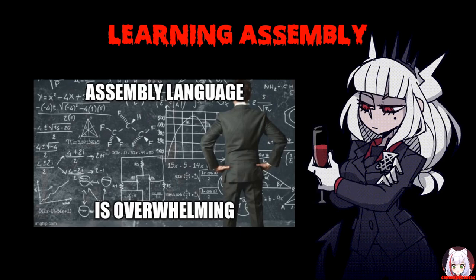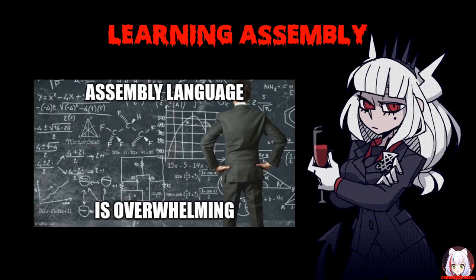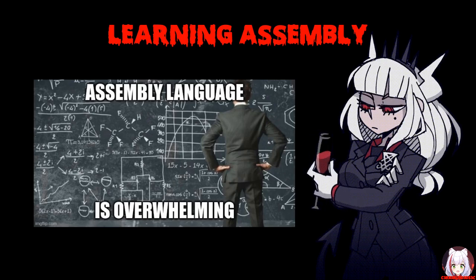People just starting to learn assembly language find it difficult, and there is a logical reason for that. When we look at assembly code from a macro view, it is immediately overwhelming — there are approximately 981 unique instructions with over 3,000 variants in the x86 architecture. The fact that x86 is such a vast architecture causes aspiring malware analysts and reverse engineers to stop learning assembly. To be honest, this is to be expected — who wouldn't be overwhelmed?